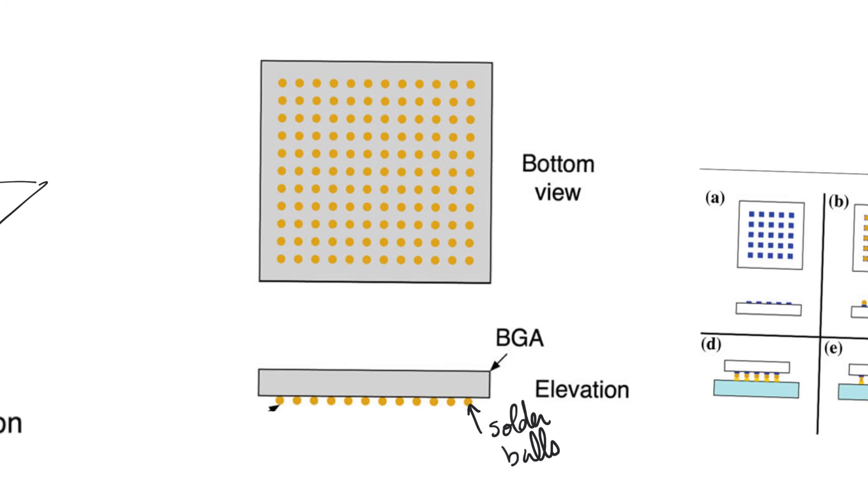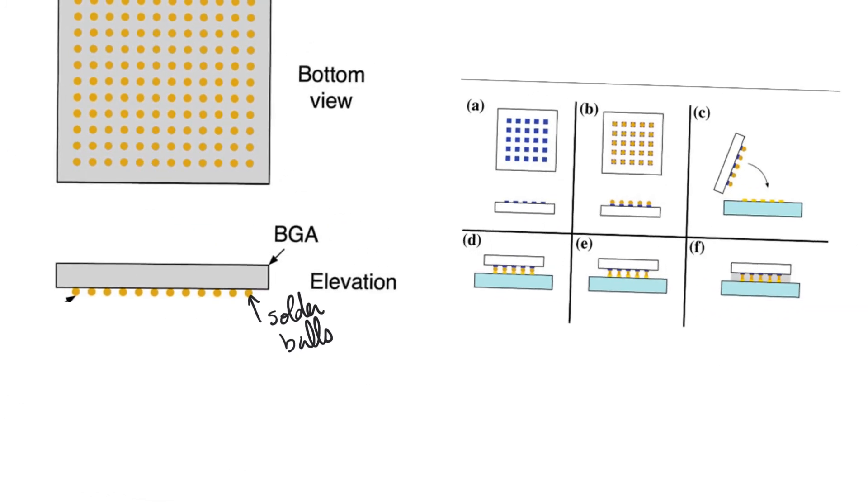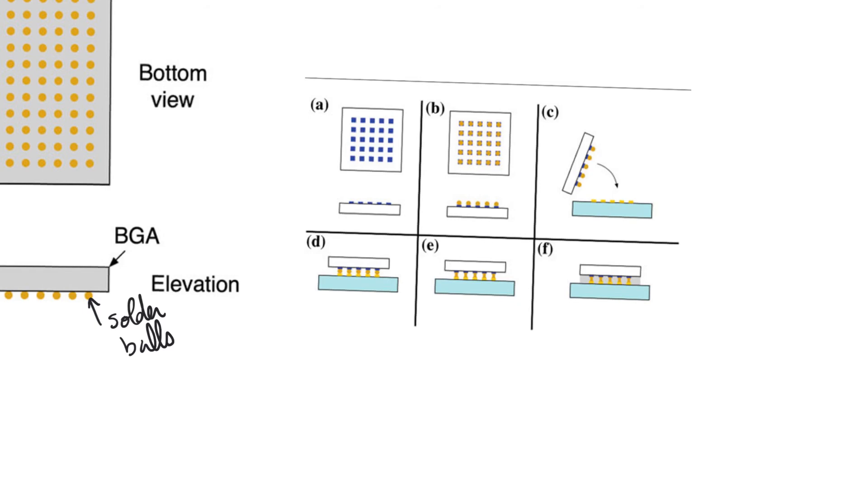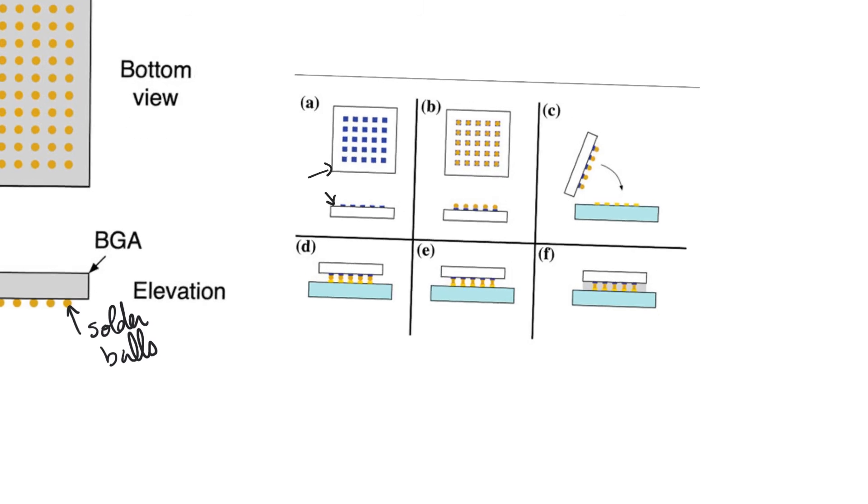The mounting technique most often used to install ball grid arrays is called flip chip. In the first step, we see the bottom view and the side view of the finished chip. The blue rectangles that you see here are the bonding pads of the chip. The bonding pads are actually protruding out of the package, which is really strange. Then you cover these bonding pads with solder balls. These solder balls are solid.